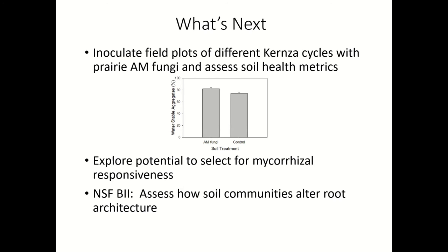We also want to explore the potential to select for mycorrhizal responsiveness using genomic modeling, like in the cycle nine and cycle ten experiments. And we want to assess how soil communities alter root architecture. With the new NSF Biology Integrative Institute grant funded in September, we are setting up mesocosms right now where we are growing Kernza and alfalfa — some with sterile soil, others with microbes — and we're going to take those apart, remove the soil, and do 3D imaging of the root architecture to see how microbes are affecting those.